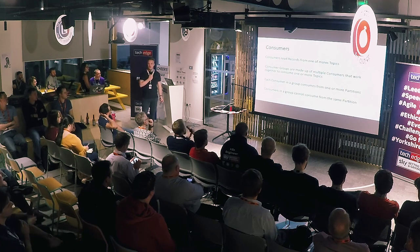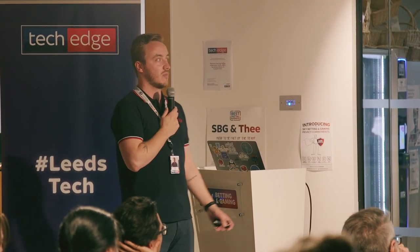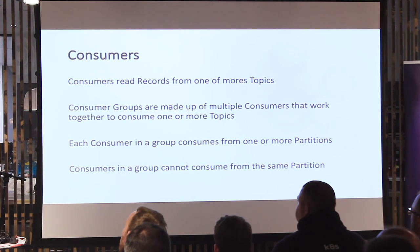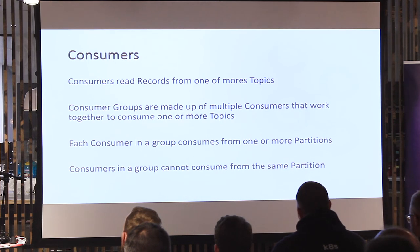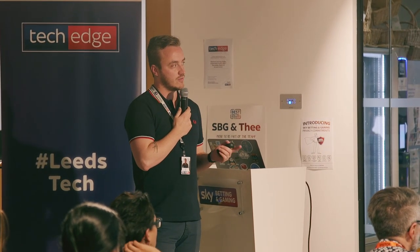Consumers read records from one or more topics, and we can have consumer groups. Consumer groups are made up of multiple consumers that work together to consume from one or more topics. You might have a topic that gets tens of thousands of messages a second — in that case it'd be good to run a consumer group. Each consumer in a group consumes from one or more partitions. If you've got a consumer group of three consumers and a topic with three partitions, you can match them one for one. But consumers in a group cannot consume from the same partition — so if you have two consumers and three partitions, one partition would be left unread.